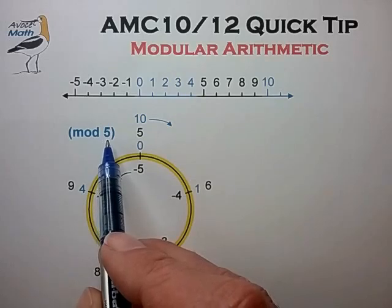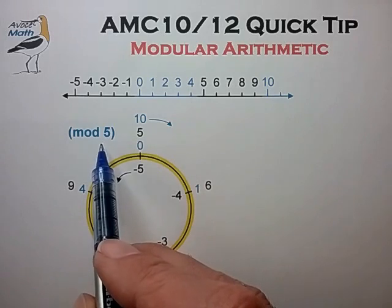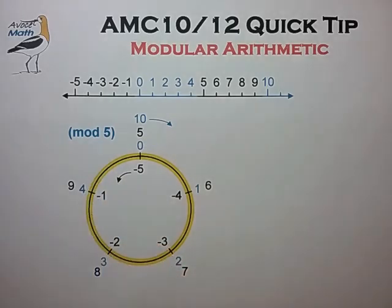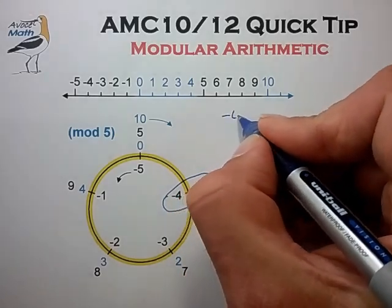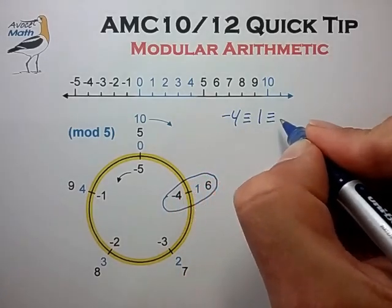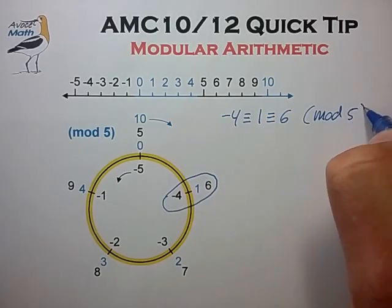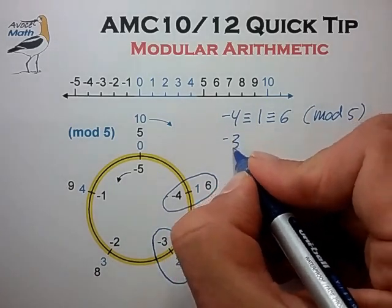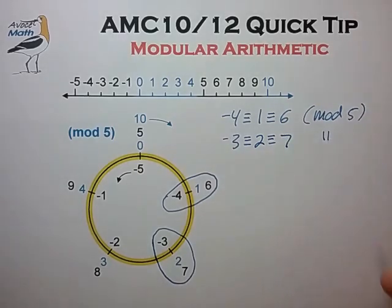Any two numbers with the same remainder are said to be congruent in that modulus. Now from the circle, we can easily pick off a few example equivalencies or congruences in the language of modular arithmetic. So for example, we say that minus 4 is congruent to 1 is congruent to 6 in modulus 5.